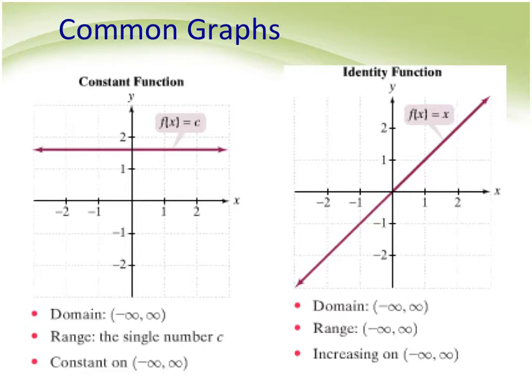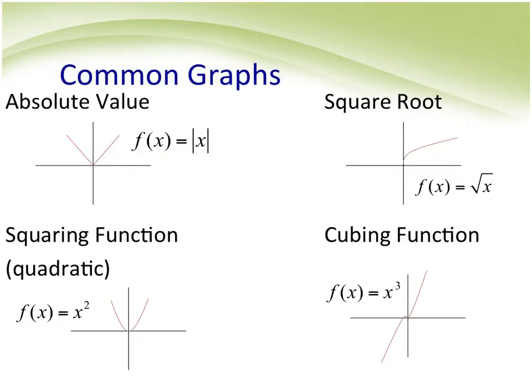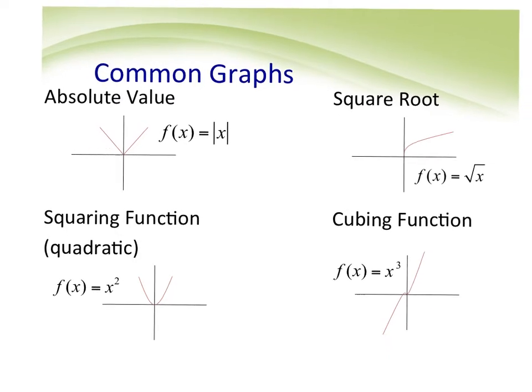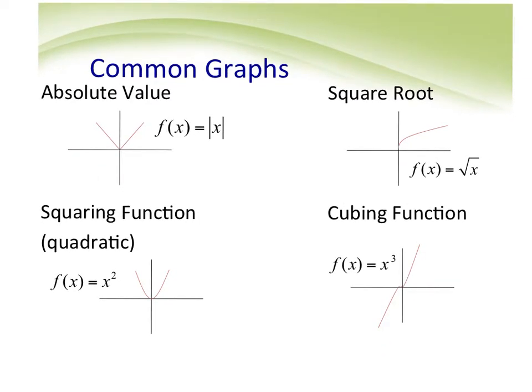Then we get more complicated: absolute value, square root, quadratic, and cubic functions — these are all parent functions you'll be expected to transform. The absolute value is the V shape. The square root is the single arc going to the right. The quadratic is a parabola (x squared). The cubic function is x to the third. You need to know the basic shapes of these — they're called parent functions.